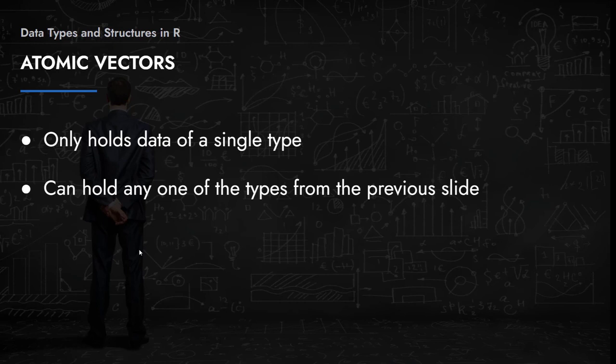With the common data types out of the way, we can now learn about atomic vectors. Atomic vectors can only hold a single type. This means if you have an atomic vector of type integer, all its constituent elements must be of the integer data type — likewise for character, logical, or numeric atomic vectors.